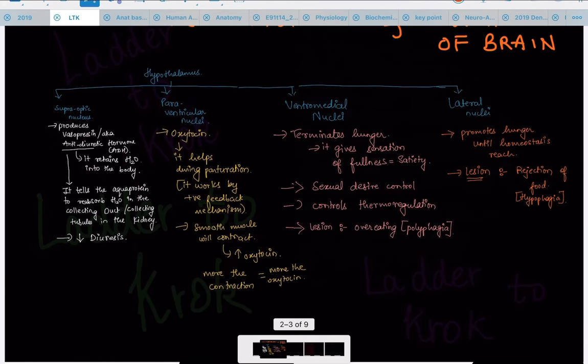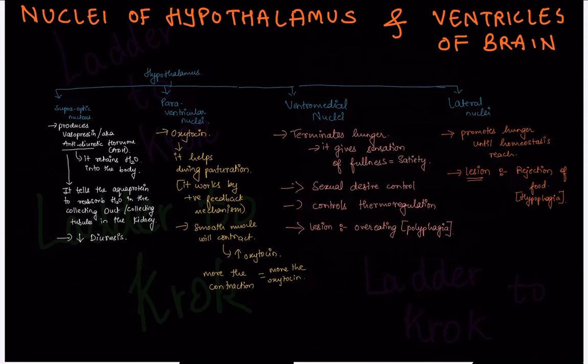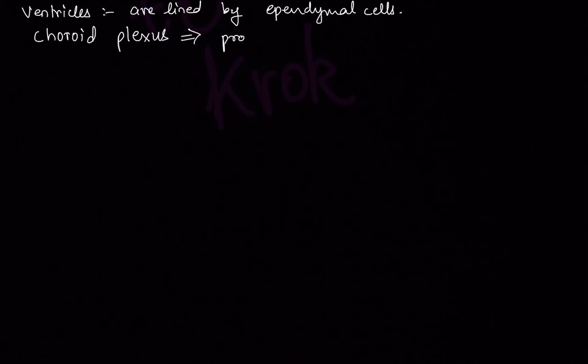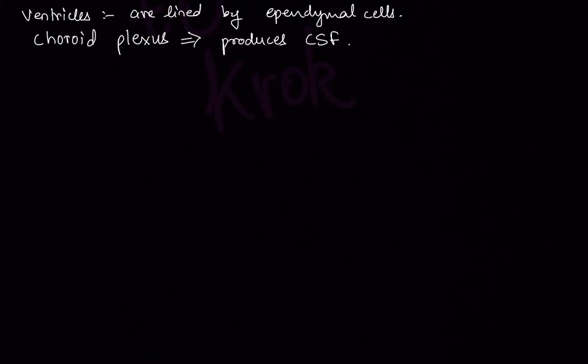That covers the nuclei of hypothalamus. Now let's move on to ventricles of the brain — a very important and easy topic. First, you must know that ventricles are lined by ependymal cells, and there is something called the choroid plexus running through these ventricles. The choroid plexus produces CSF — cerebrospinal fluid — whose functions include nourishment, protection, and waste removal.